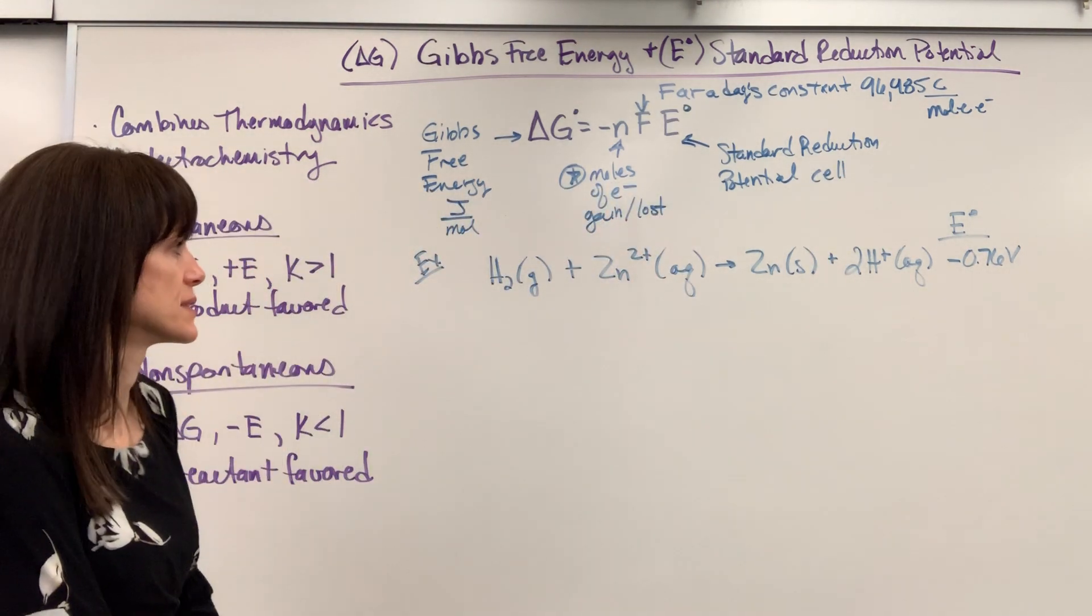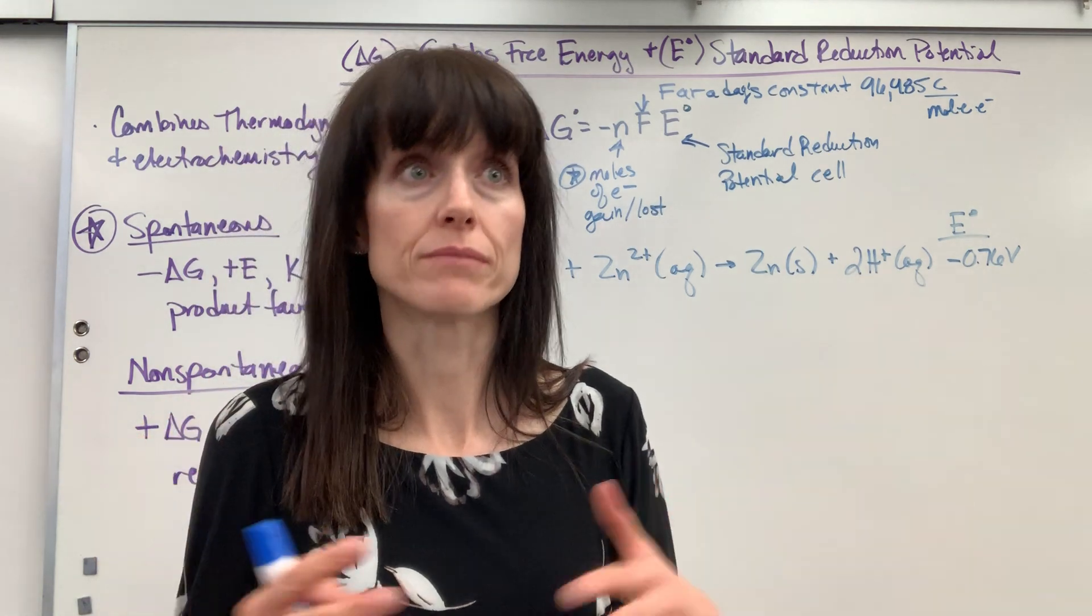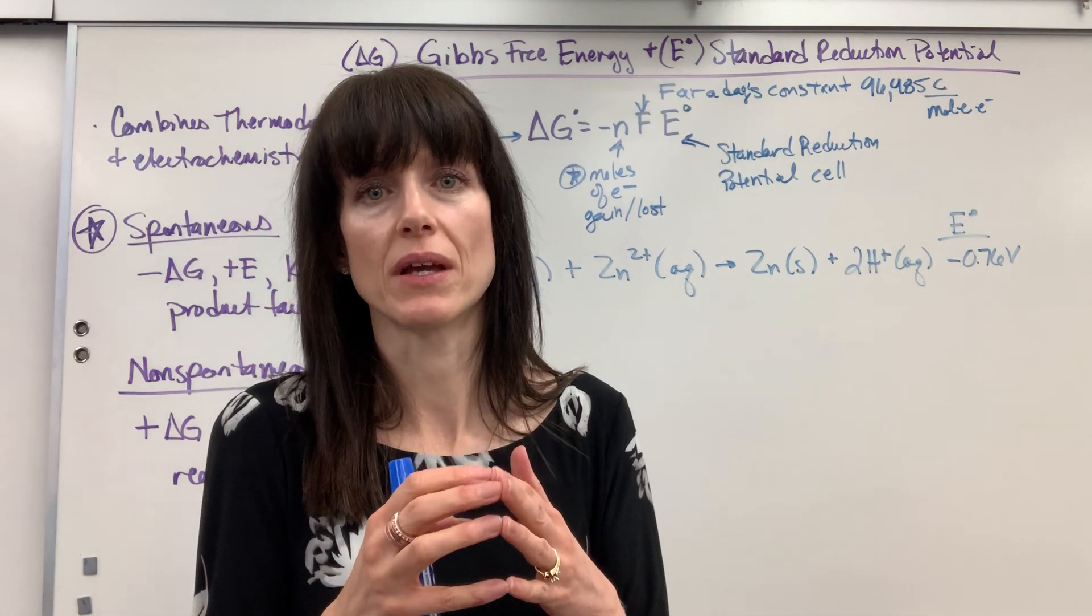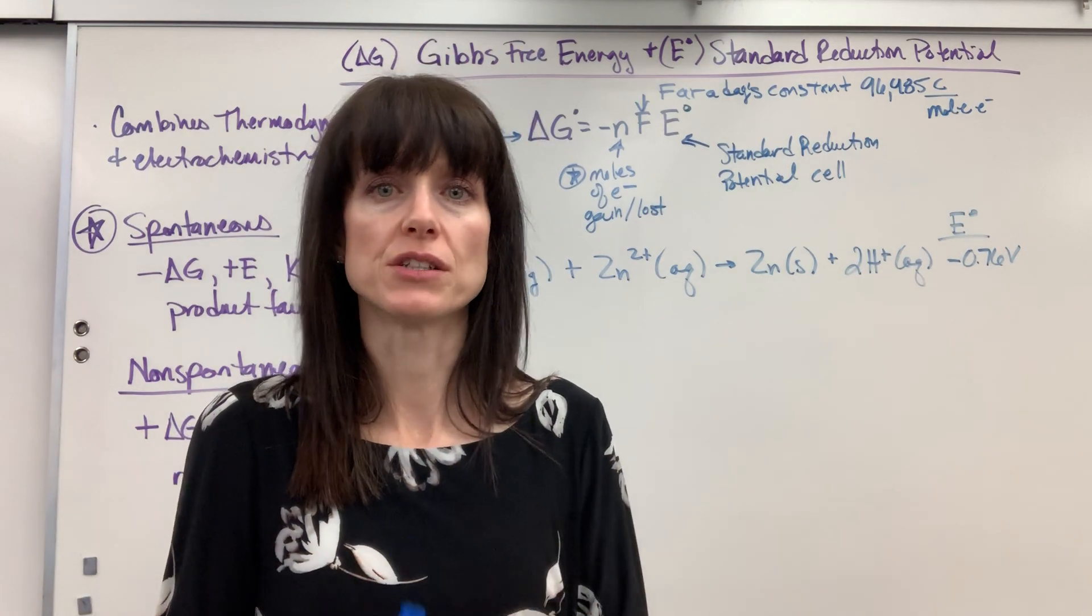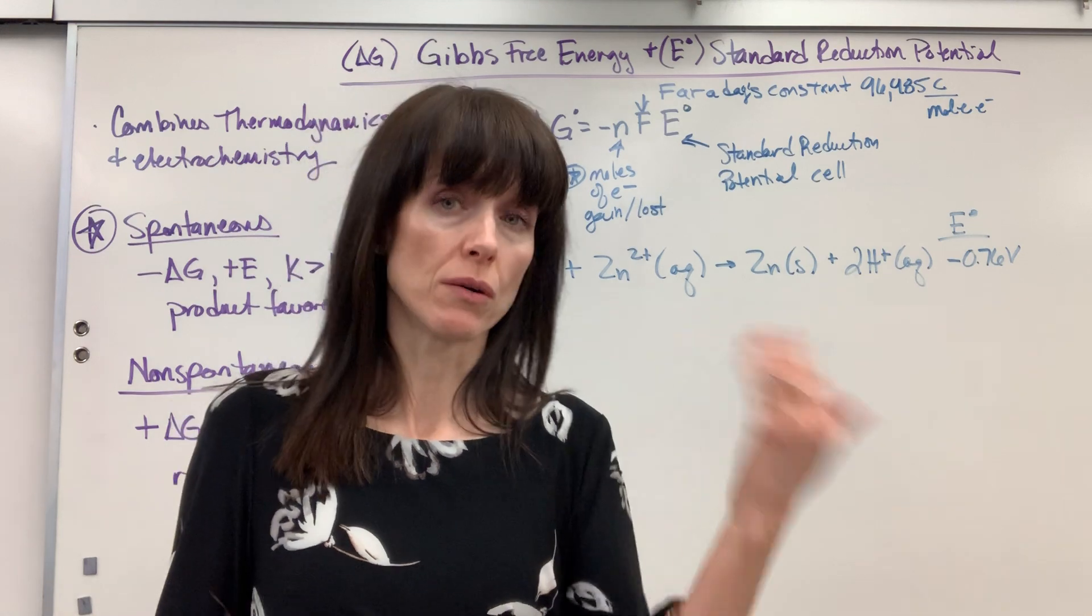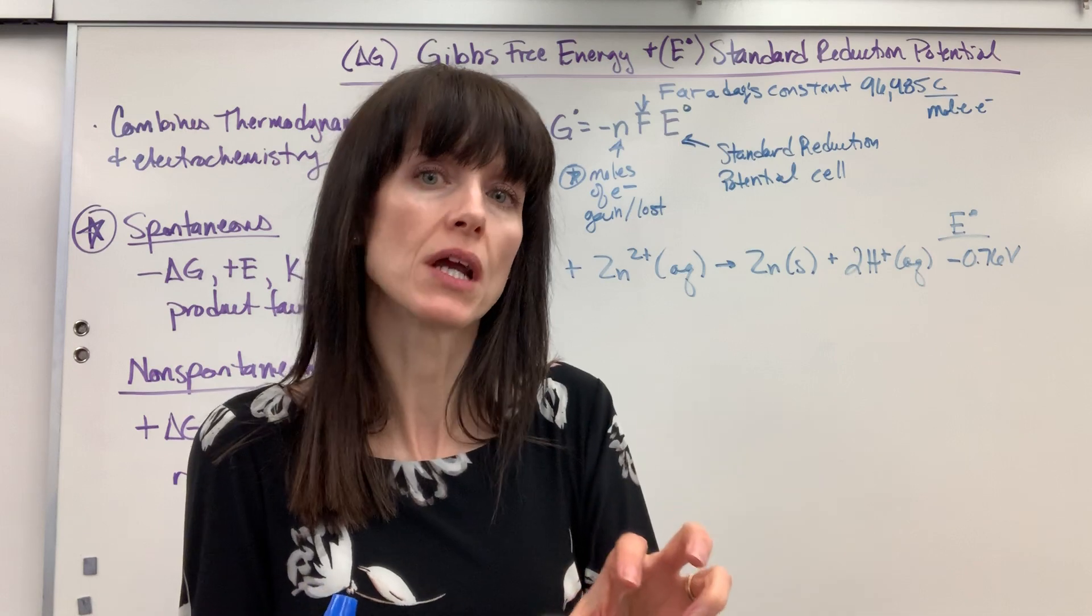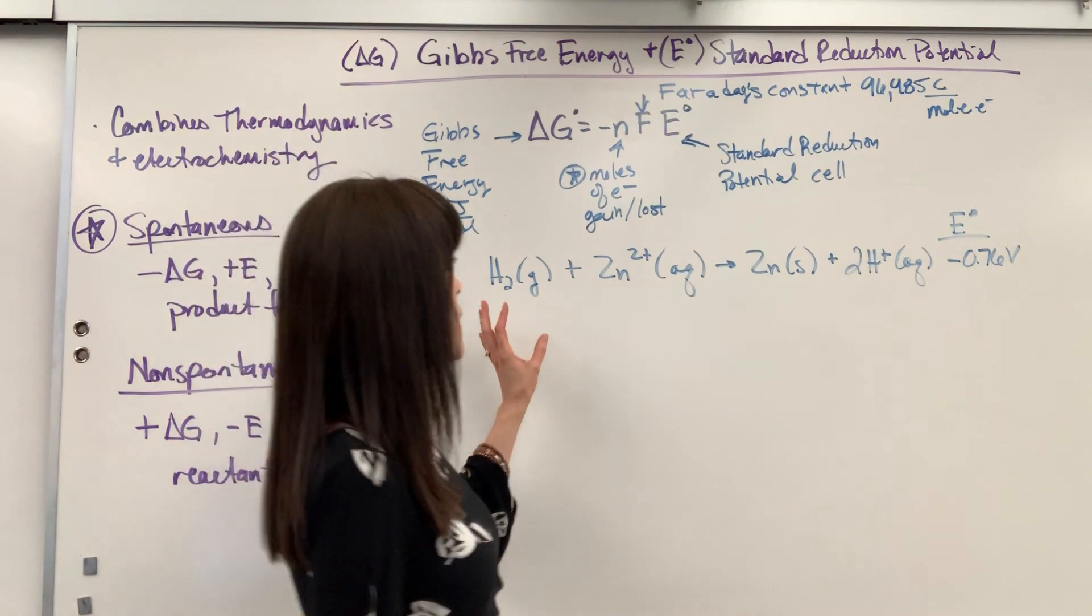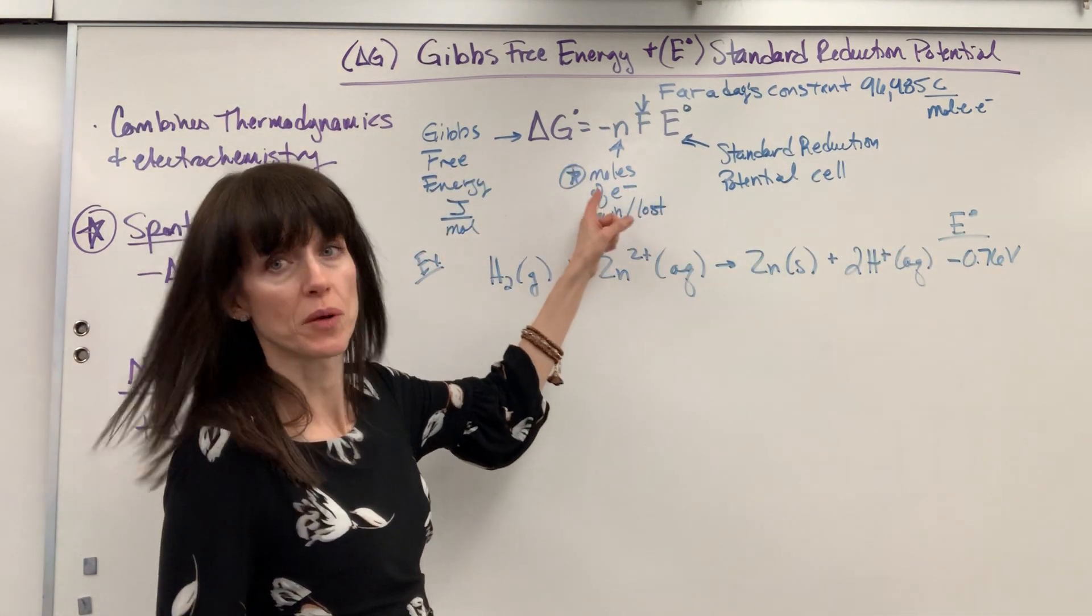You find your two half reactions, you have to balance that, calculate E. If you don't know how to balance half reactions or calculate E, go to my playlist Redox electrochemistry watch both of those videos. From there you have to balance the half reactions, calculate E, and then plug it into this formula.